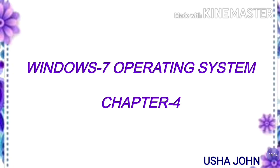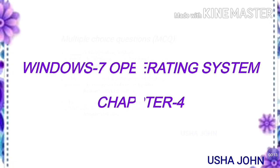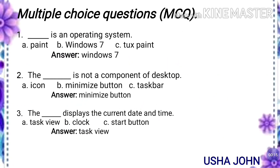Hello students, this is Usha, your computer teacher. Today we are going to discuss about Windows 7 operating system, Chapter 4 exercises. First, multiple choice questions. First one: dash is an operating system. Answer: Windows 7 is an operating system.